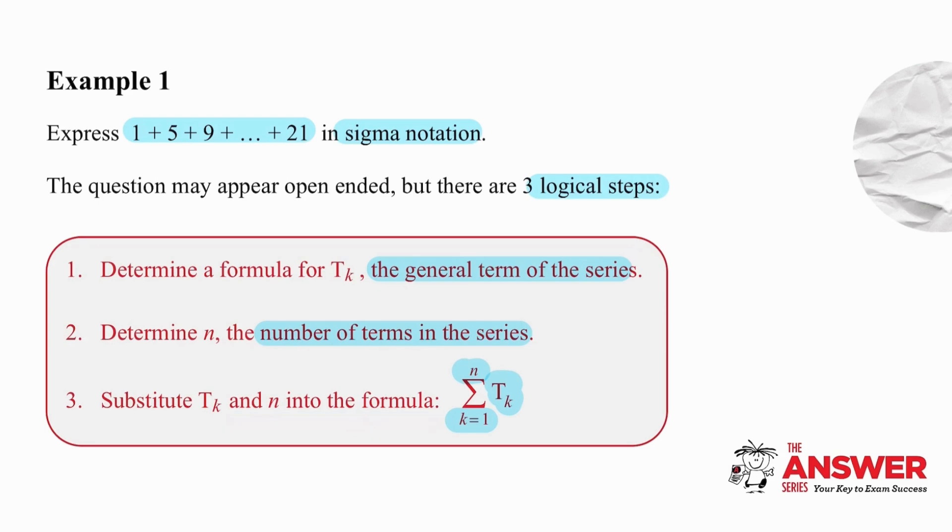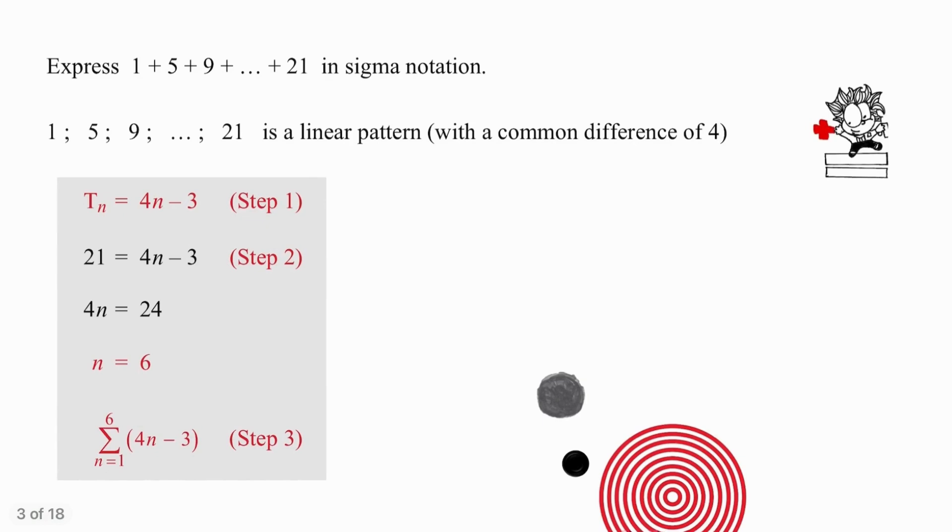Pause the video and try this on your own. We have a linear pattern with a difference of 4, so the general term is Tn equals 4n minus 3. If we equate the last term that we have been given with the formula, we can work out that there are six terms in this series, and then we simply write down that we are substituting values from 1 to 6 using the formula 4n minus 3.